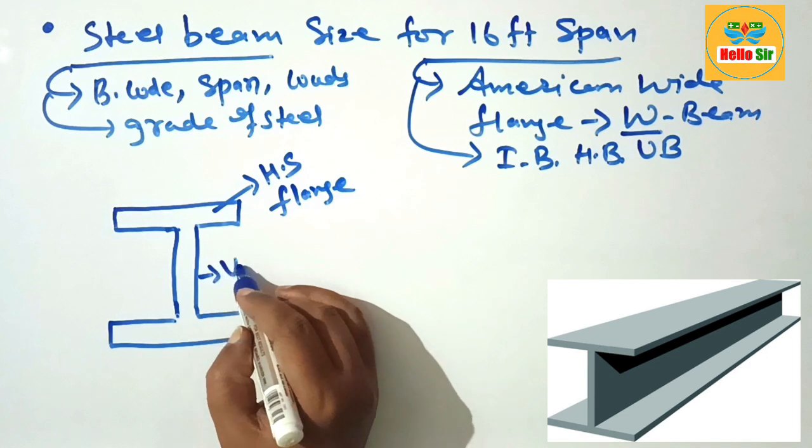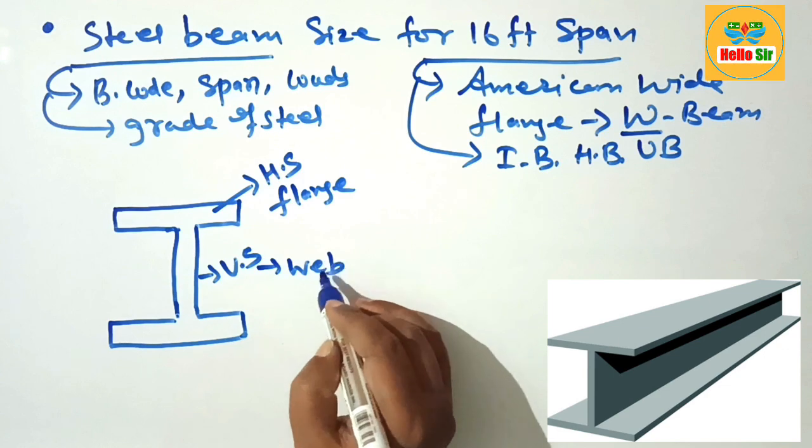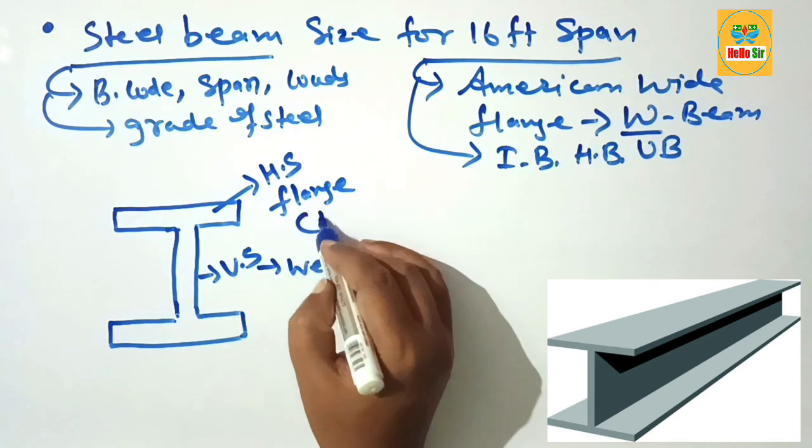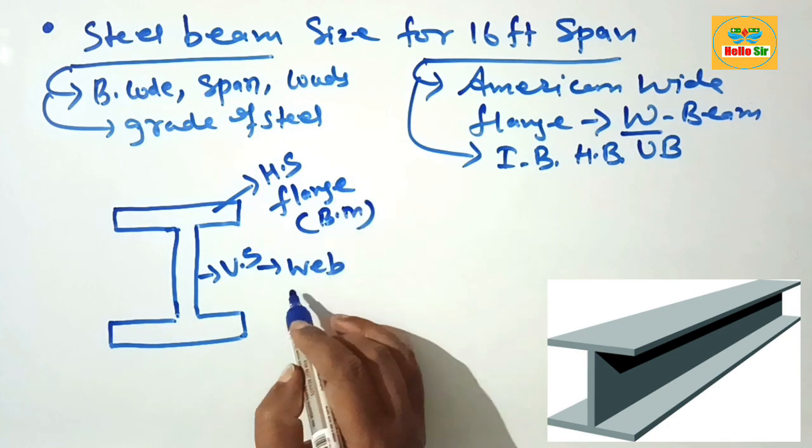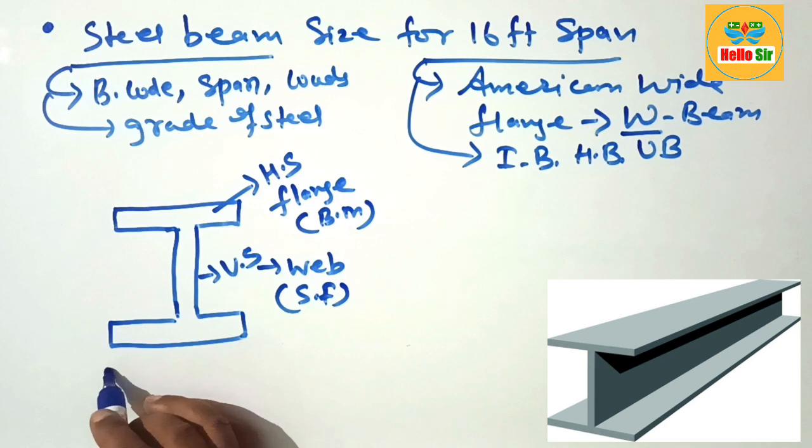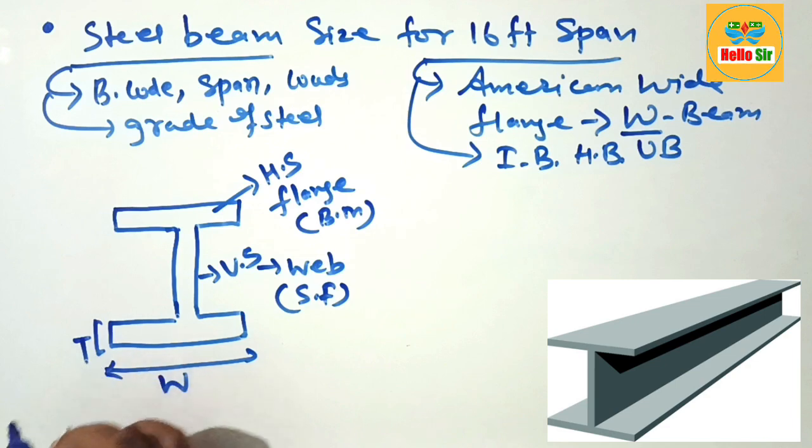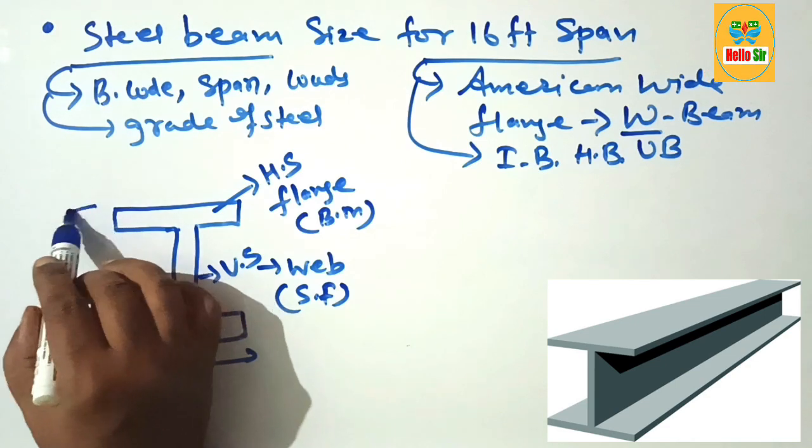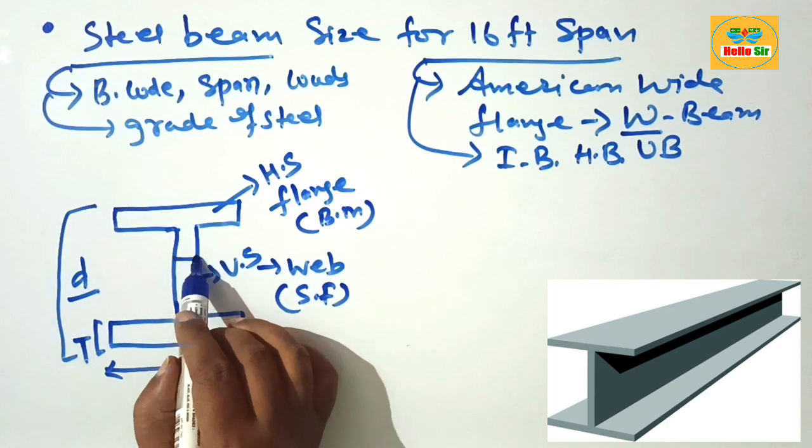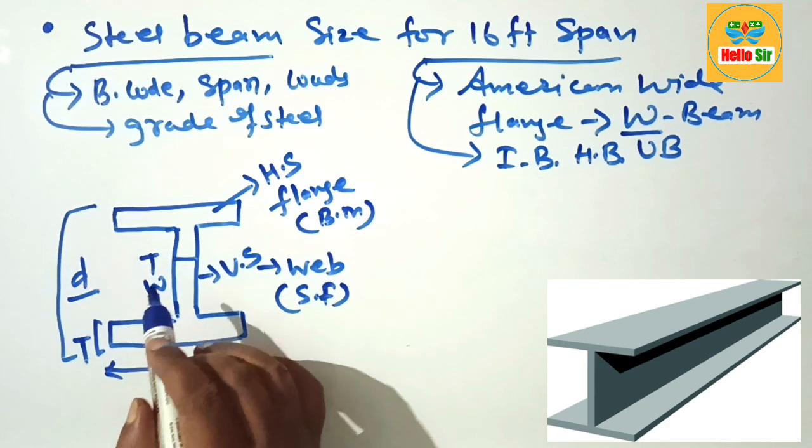This is horizontal section of the beam known as flange and this one is vertical section of the beam which is known as web. The flange generally resists bending moment and web resists shear forces. This is width of flange, thickness of flange, depth of the beam, and thickness of web.